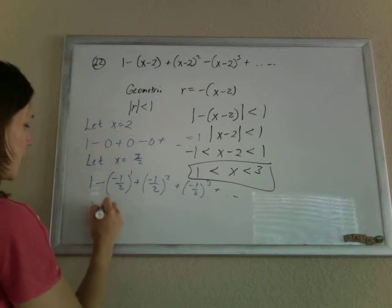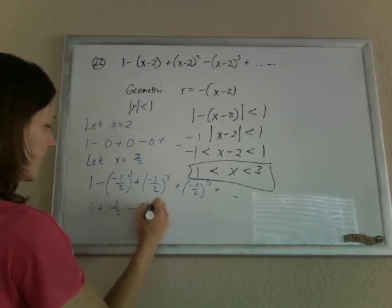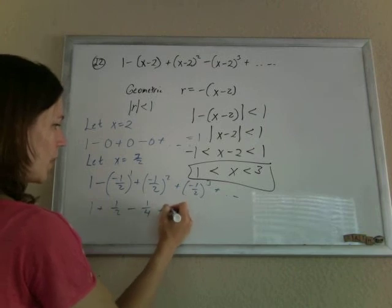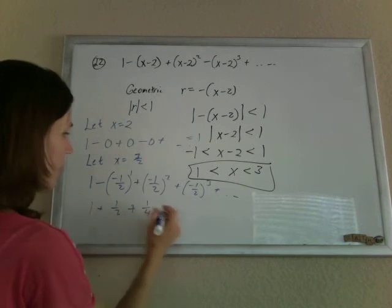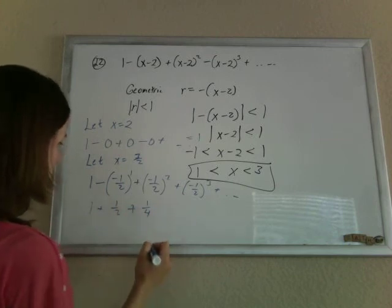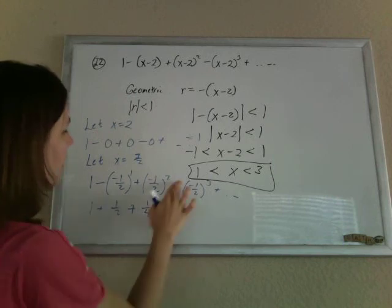So this is 1 plus 1 half minus 1 fourth, let's see, oh no, plus 1 fourth. What if I do, oh, that was supposed to be minus.